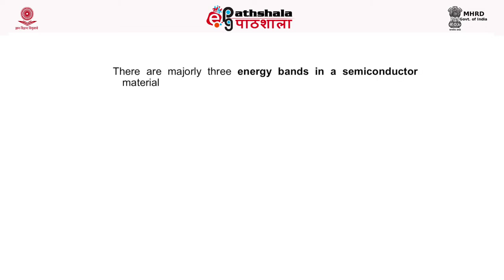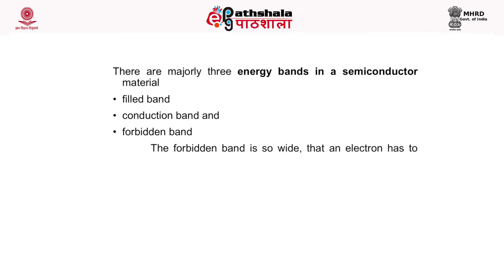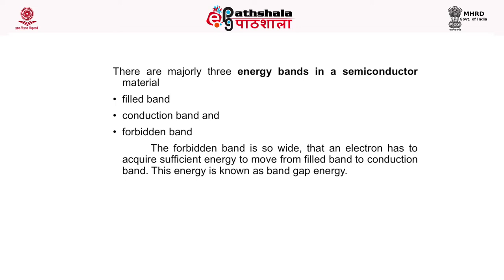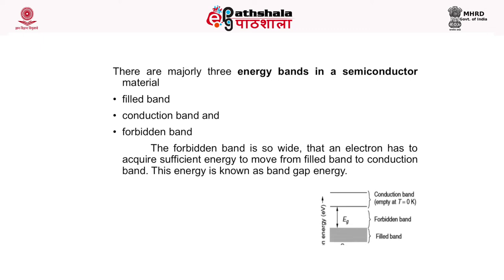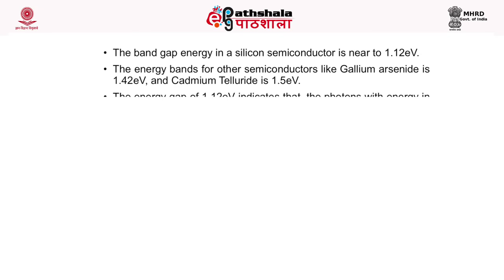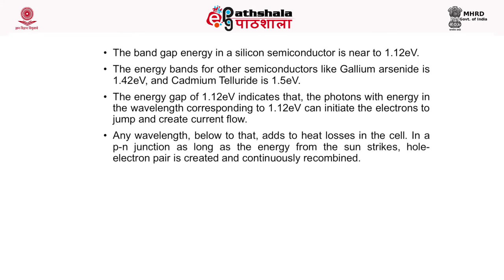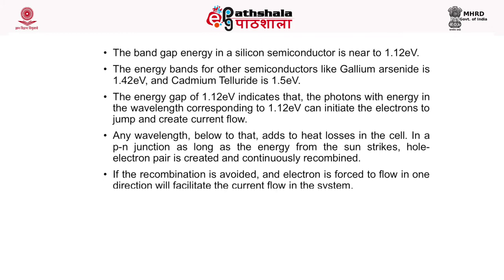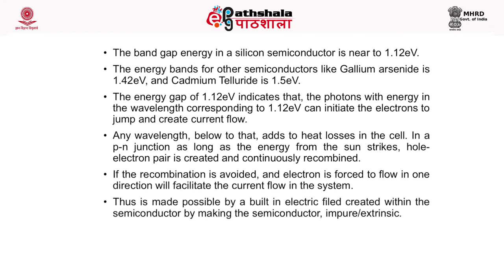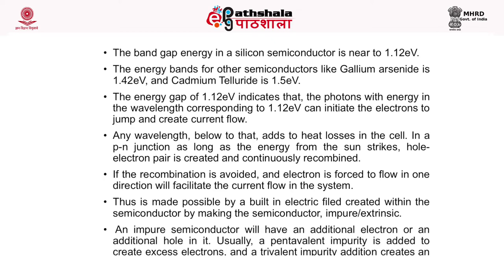There are majorly three energy bands in a semiconductor: the filled band, conduction band, and forbidden band. The forbidden band is so wide that an electron must acquire sufficient energy to move from the filled band to the conduction band — this energy is known as band gap energy. The band gap energy in silicon is 1.12 eV, gallium arsenide is 1.42 eV, and cadmium telluride is 1.5 eV. The 1.12 eV gap indicates that photons with energy corresponding to this wavelength can initiate electrons to jump and create current flow.